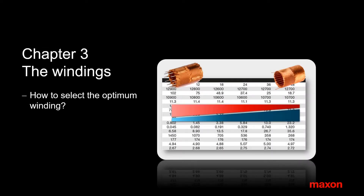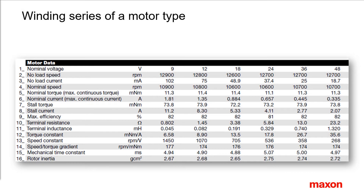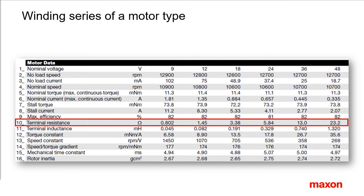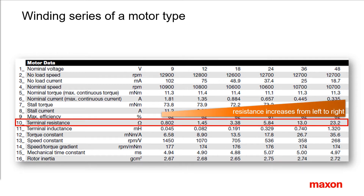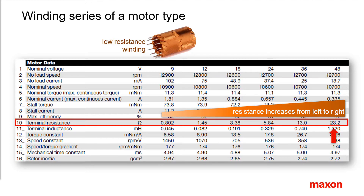Maxon motors can be made with different windings. This third chapter deals with the properties of the winding series. In the Maxon catalogue, the different windings of a motor type are listed in columns. The column order stems from the winding resistance that increases from left to right. The first winding on the left is made with a wire of the largest diameter. Only a few winding turns can be placed in the air gap between housing and permanent magnet. Correspondingly, the resistance is low and only a low voltage is needed to drive relatively high currents. The last winding on the right is made with the thinnest wire and many turns. The resistance is higher and the required voltages are high, but there is only a low current flow.